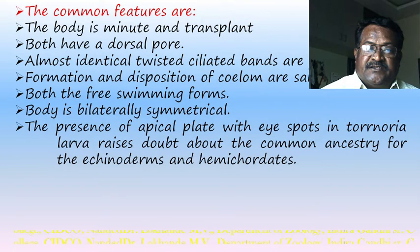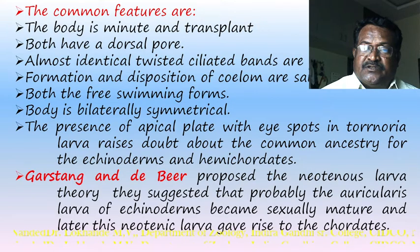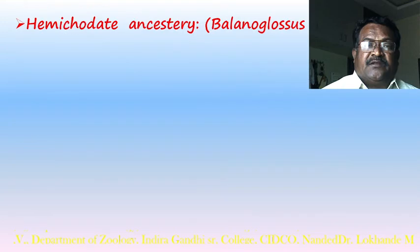The presence of an apical plate with an eye spot in the tornaria larva raises doubt about the common ancestor for echinoderms and hemichordates. Garstang and de Beer proposed the neoteny larva theory, suggesting the auricularia larva of echinoderms became sexually mature and gave rise to the chordates. The hemichordate ancestry — or Balanoglossus ancestry — provides strong suggestive evidence for the early evolutionary stage of the deuterostome group.